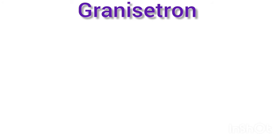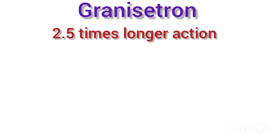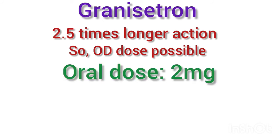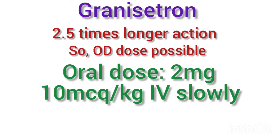Another drug in the 5-HT3 antagonist group is Granisetron. It is 2.5 times longer acting than Ondansetron, so once daily dosing is possible. The usual dose is 2 mg once daily orally or 10 µg per kg IV slowly over 30 seconds. It is a more selective 5-HT3 receptor antagonist than Ondansetron.